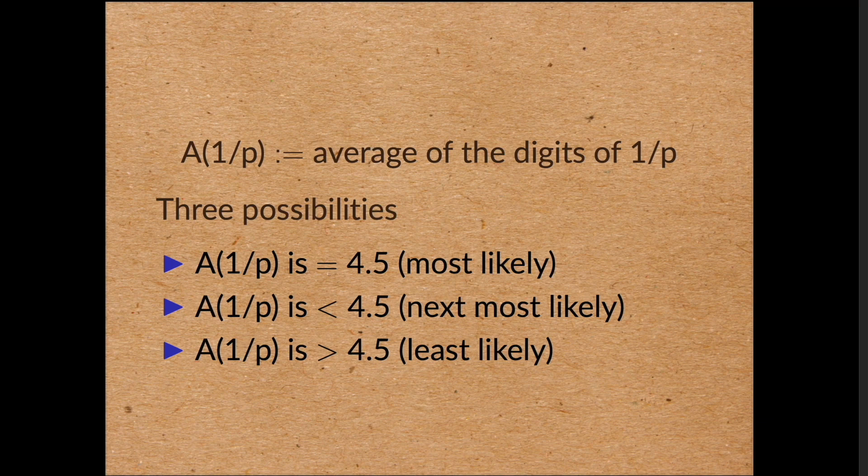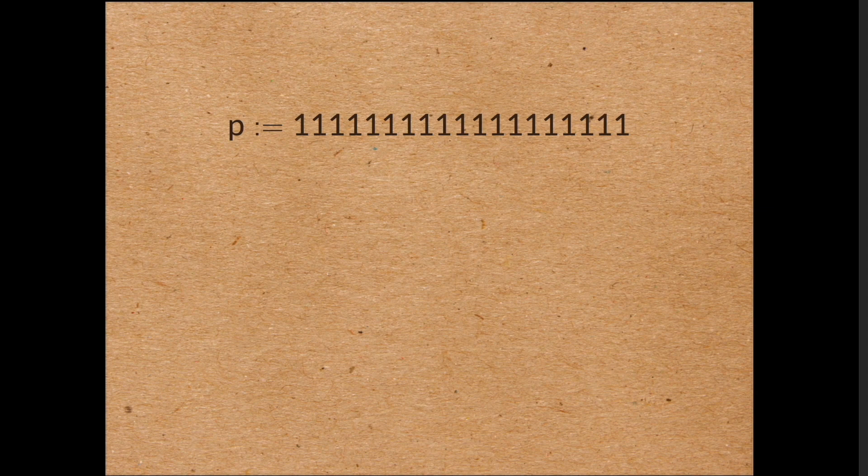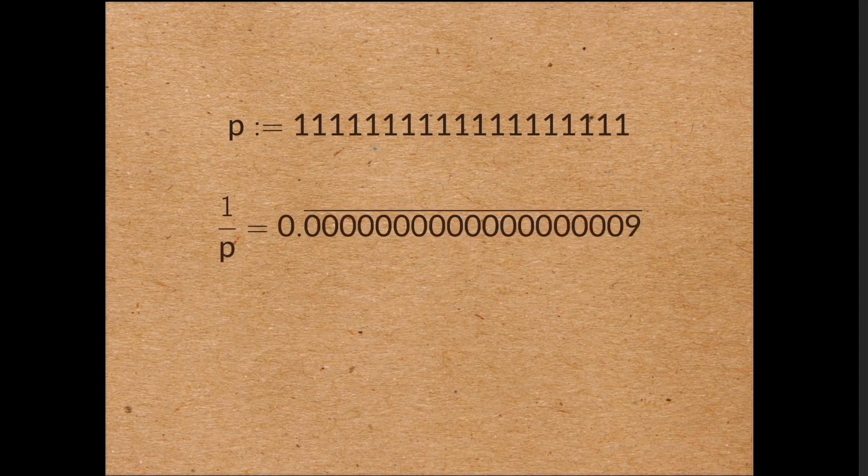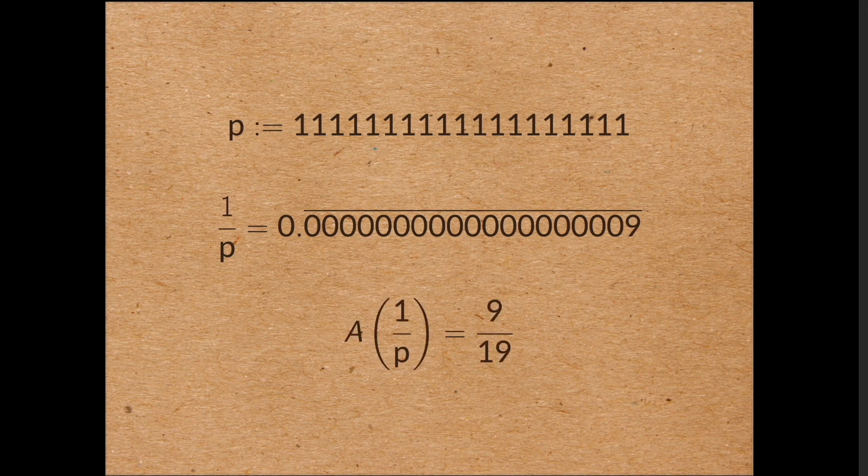Let's first consider how small a of 1 on p can be. Let's take the following prime given by taking 19 ones in a row. This is 10 to the 19 minus 1 divided by 9. If you take this prime, and then you write 1 on p, the decimal expansion has a long set of zeros followed by a single 9. But that means that the average digit is just 9 divided by the number of digits, 19 in this case. And so the average digit is really small.